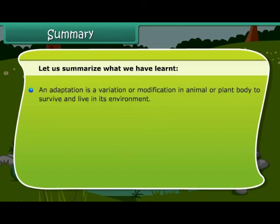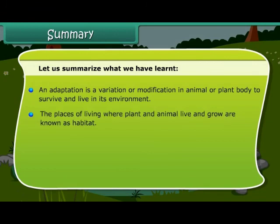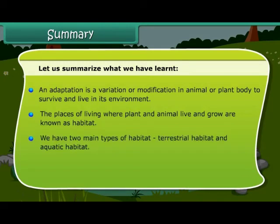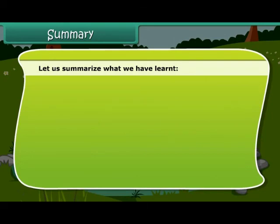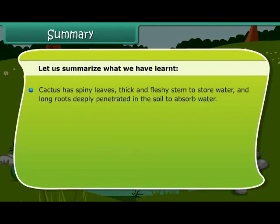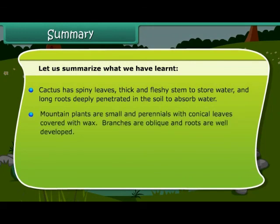Let us summarize what we have learned. An adaptation is a variation or modification in an animal or plant body to survive and live in its environment. The place of living where plants and animals live and grow is known as habitat. There are two main types: terrestrial habitat and aquatic habitat. Camel adaptations include long eyelashes and nostrils, a hump to store fat, and wide flat feet to walk on sand. Cactus has spiny leaves, a thick and fleshy stem to store water, and long roots deeply penetrated in the soil. Mountain plants are small and perennial with conical wax-covered leaves, oblique branches, and well-developed roots. Mountain animals have thick skin and fur. Aquatic animals have a streamlined body, flat tail and fins, and gills for respiration.